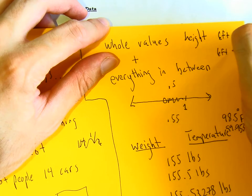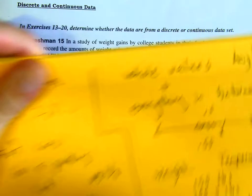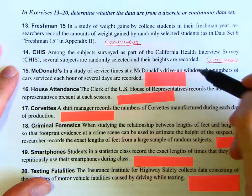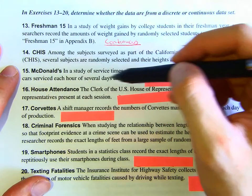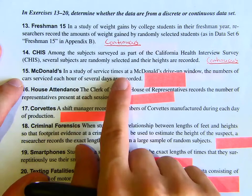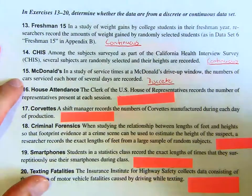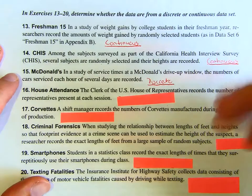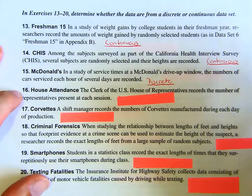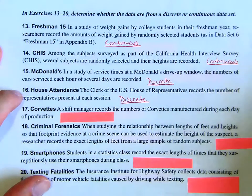Number 15: in a study of service times at a McDonald's drive-up window, the number of cars serviced each hour is recorded. The number of cars is discrete — you can't record half a car. Number 16: the clerk of a U.S. House of Representatives records the number of representatives present at each session. This is talking about number of people, so this is discrete.